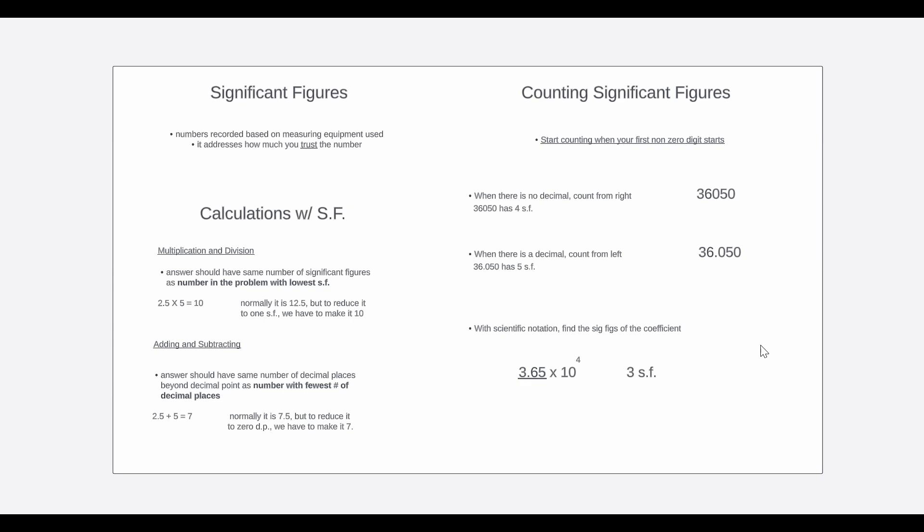So we can see in 36,050, our first non-zero digit is the first number itself. And from then onwards, we encounter four digits, so it has four significant figures.